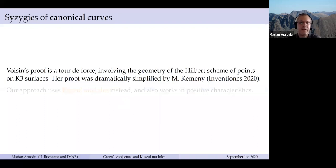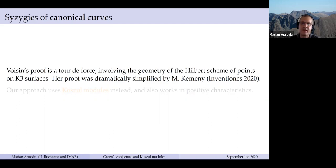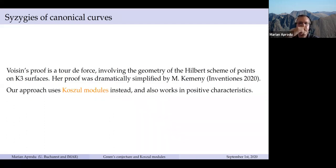Voisin's proof is rather involved and quite intricate, but there is a massive simplification by Kemeny, to be published in Inventiones. We found a different proof of Voisin's theorem using Koszul modules instead of Hilbert schemes as she did. One advantage is that whereas her proof only works over complex numbers — because she has a trace argument that involves dividing by some numbers, requiring care about the characteristic — our result also works in positive characteristic.